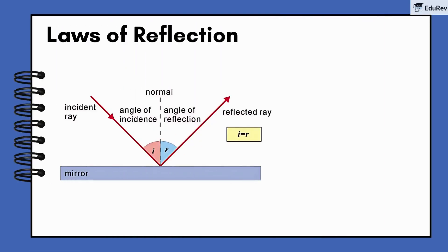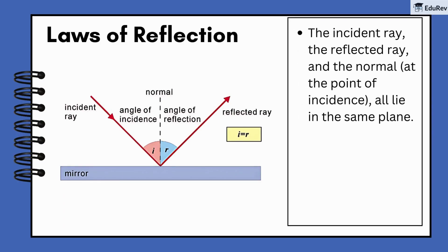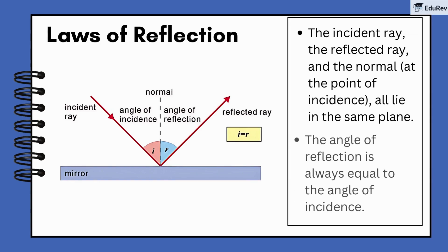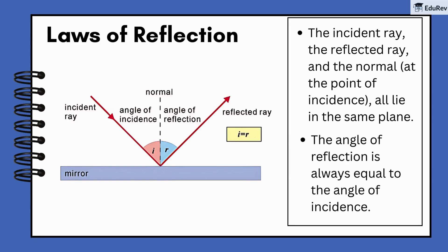We have two important laws of reflection to remember. First, the incident ray, the reflected ray, and the normal all lie in the same plane. Secondly, and this is really interesting, the angle of reflection is always equal to the angle of incidence. That's why we can predict how light will reflect.